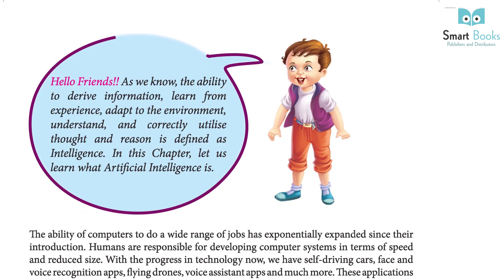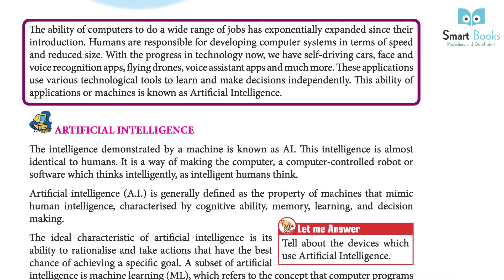Hello friends. As we know, the ability to derive information, learn from experience, adapt to the environment, and understand and correctly utilize thought and reason is defined as intelligence. In this chapter, let us learn what artificial intelligence is. The ability of computers to do a wide range of jobs has exponentially expanded since their introduction. With the progress in technology, now we have self-driving cars, face and voice recognition apps, flying drones, voice assistance apps, and much more. These applications use various technological tools to learn and make decisions independently. This ability of an application or machine is known as artificial intelligence.